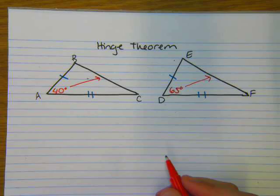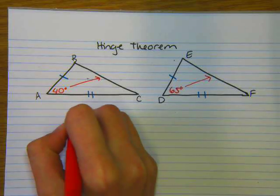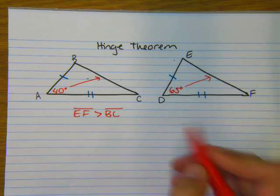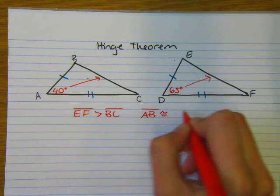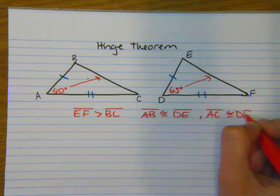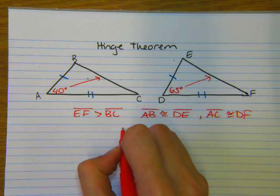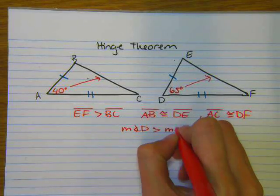So from this information, we know that the larger included angle is in this triangle, so our larger side is EF, so EF is greater than BC. And we know this because of our two congruent sides, so AB is congruent to DE, and then we also had AC was congruent to DF. And the biggest piece of information that tells us that EF is larger than BC, the side length is greater, the segment is larger, because the measure of angle D is greater than the measure of angle A.